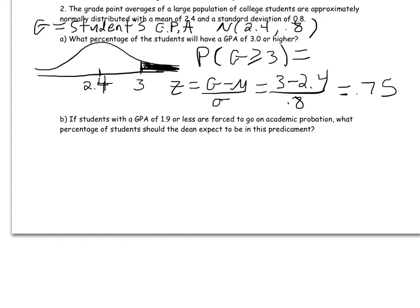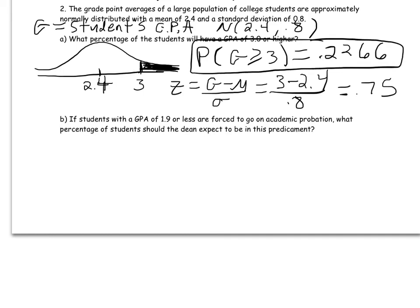To find that area, I do normal CDF of 0.75 (the Z-score at the boundary) comma 9999 for the right tail out to infinity. That gives me 0.2266. So about 22.66% of students from this large population have a GPA higher than 3.0.